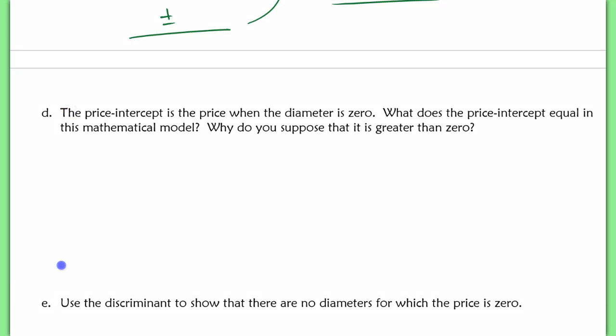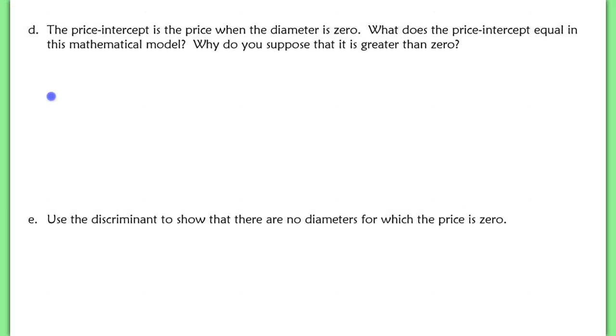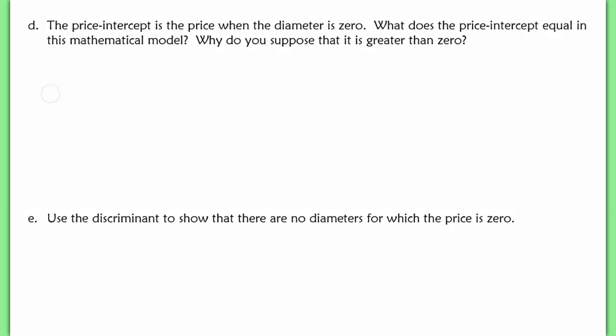All right, moving on. Now we're going to do some stuff where we interpret our answers. So here it says the price intercept is the price when the diameter is 0. What does the price intercept equal in this mathematical model? And why do you suppose that it's greater than 0? If I take a look at my original function, that y-intercept is found just by letting x equal 0. If we plug in 0 here, this term and this term disappear, leaving me with y equaling 0.45.